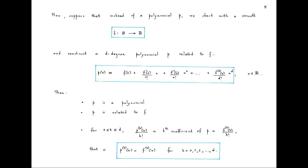This is the story with polynomials, but now suppose that instead of a polynomial p we start with a smooth function f from ℝ to ℝ. For now let's take f to be infinitely many times differentiable. We have a smooth function but no polynomial inside, but suppose that we construct a degree-d polynomial p related to our given smooth function f: p(x) is defined by f(0) plus f'(0)/1! times x, plus up to the dth derivative of f at 0 divided by d! times x^d, where x is in ℝ.